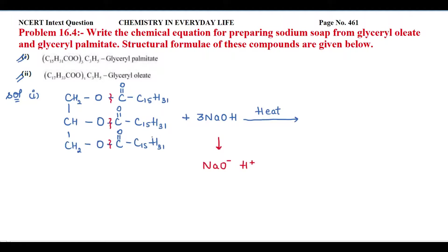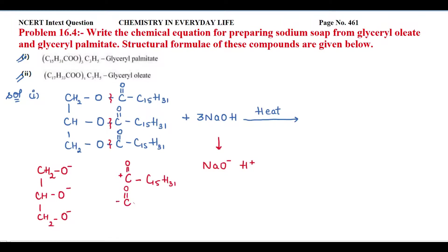Upon dissociation, we get CH₂O⁻, CHO⁻, and CH₂O⁻ from the glycerol backbone, and three positively charged C(=O)–C₁₅H₃₁ fragments. We now have three NaO⁻ ions, which attack these three positively charged C(=O)–C₁₅H₃₁ groups.